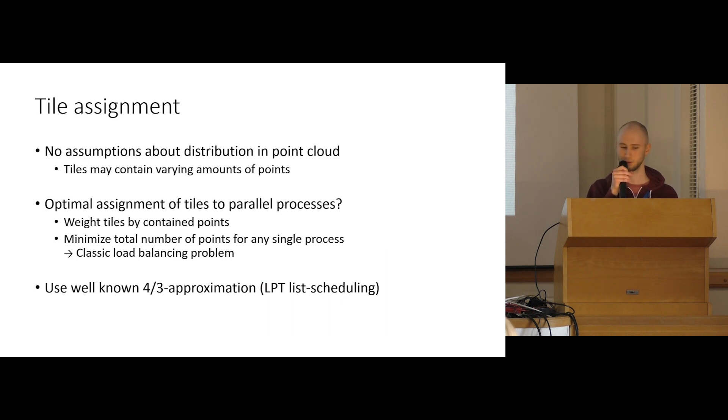So we have split our input. Now we have to distribute it. There is no assumption about the distribution of points within the point cloud for us, at least. So each tile may contain various counts of points. There may be tiles with fewer points, tiles with more points. So computing the perfect assignment so that each process gets an equal number of points is actually a very hard task. It's the classic problem of load balancing. But fortunately for us, there are many approximation algorithms. We chose the simplest one. It's LPT list scheduling. And it's guaranteed to give a solution that is within four thirds of the optimal solution.